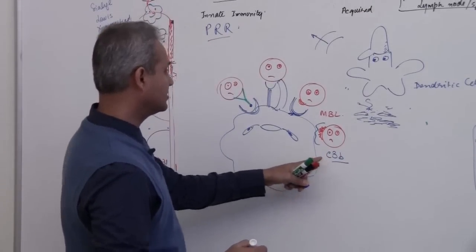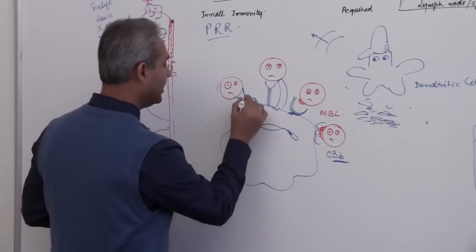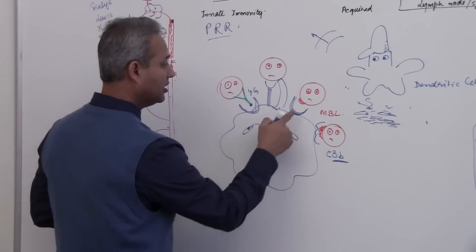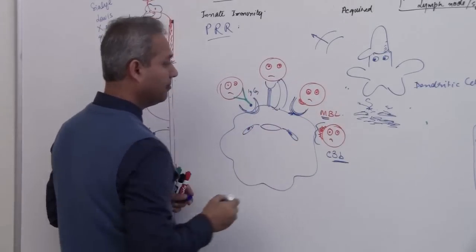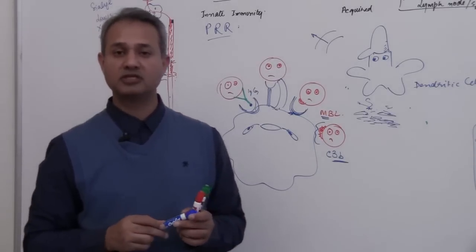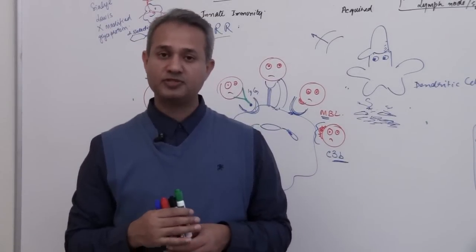These chemical substances C3B, IgG, the MBL, mannose binding lectin, these are called opsonizers or opsonins.